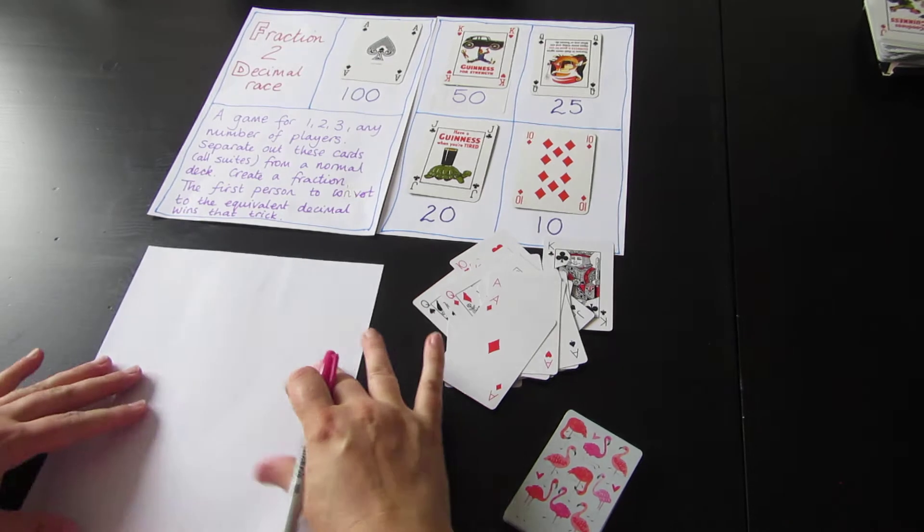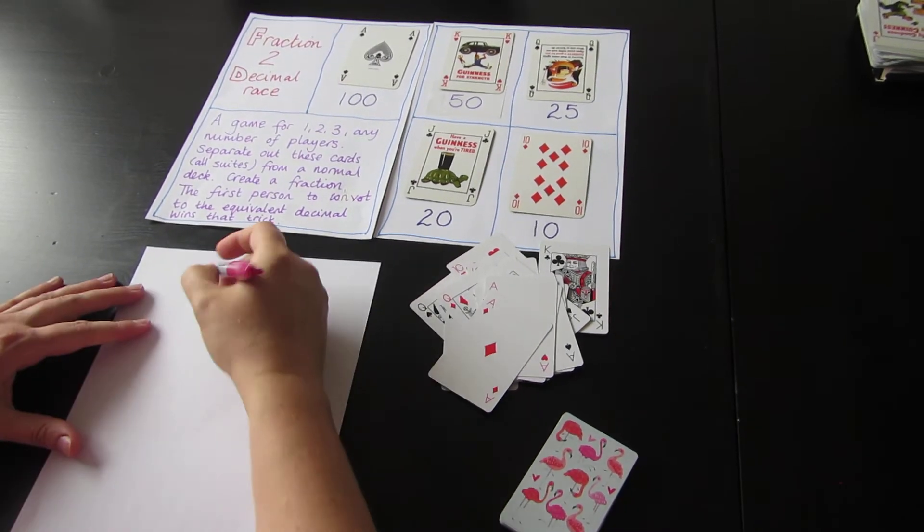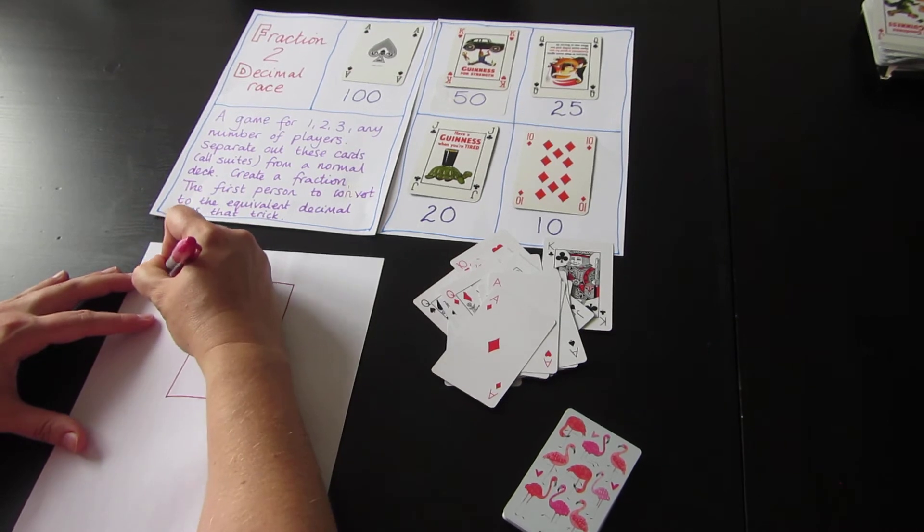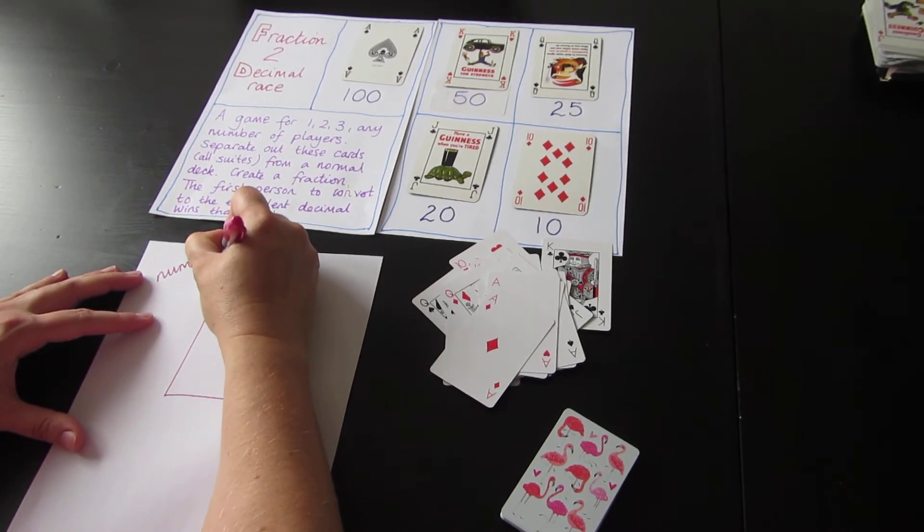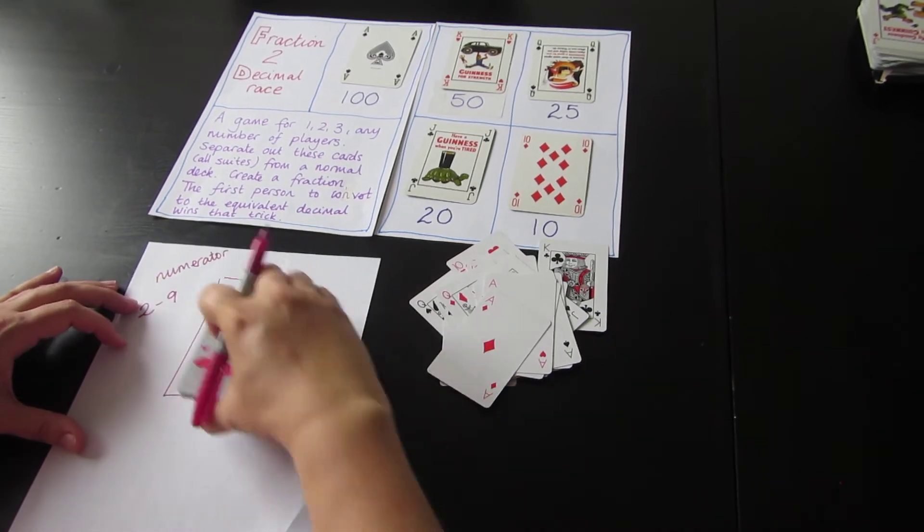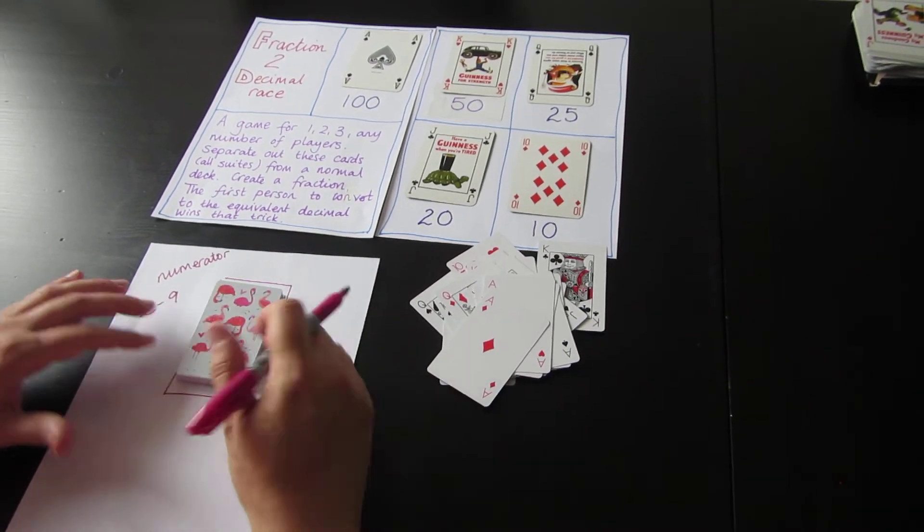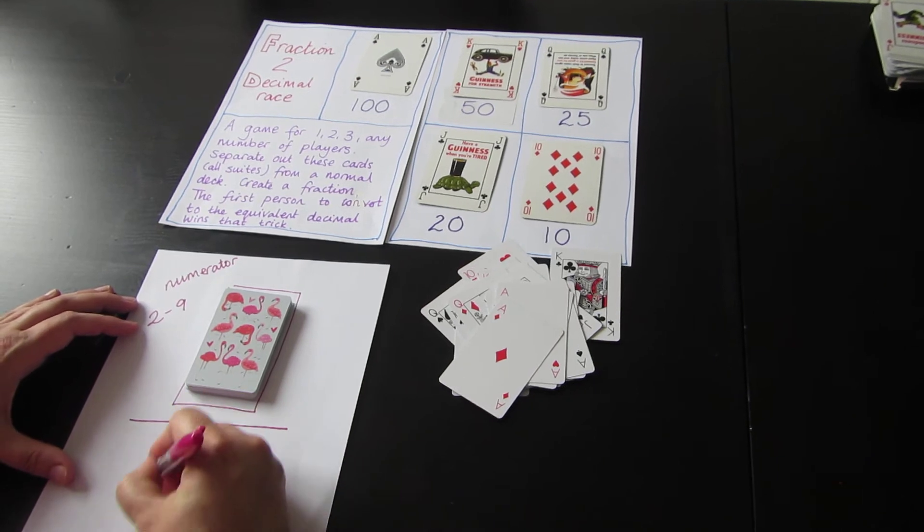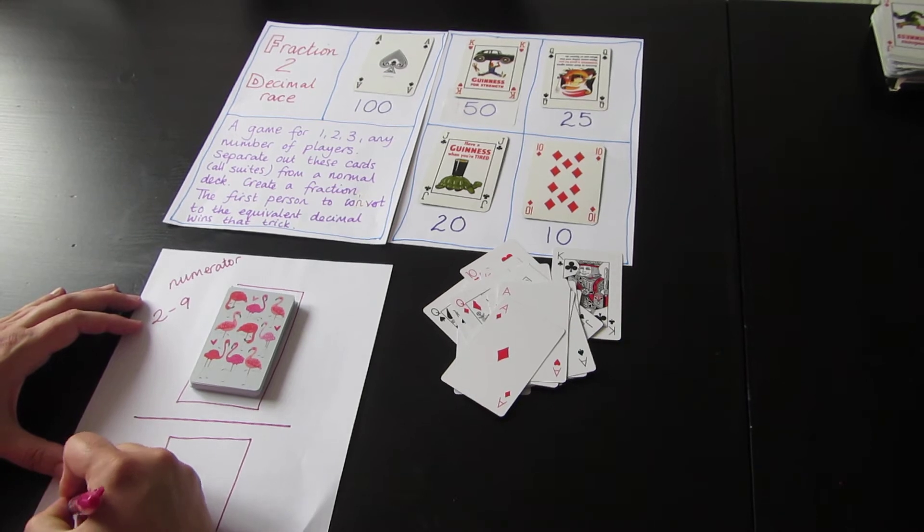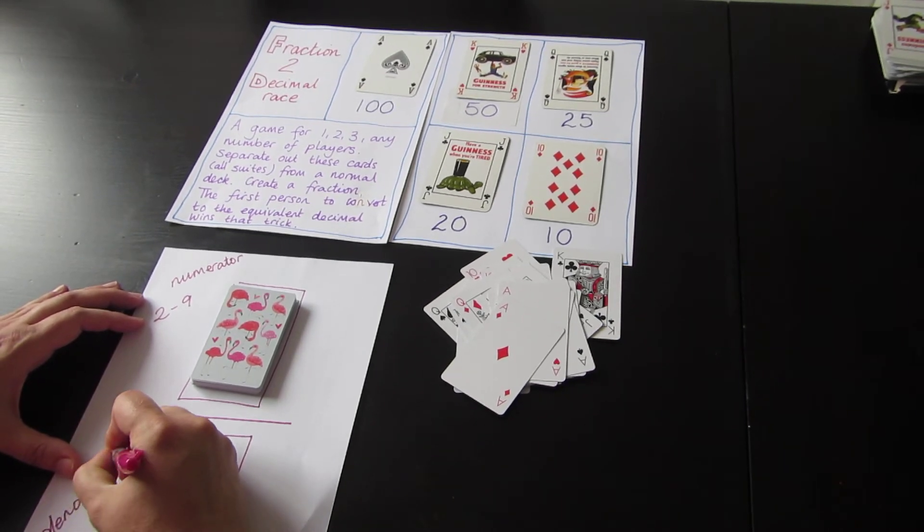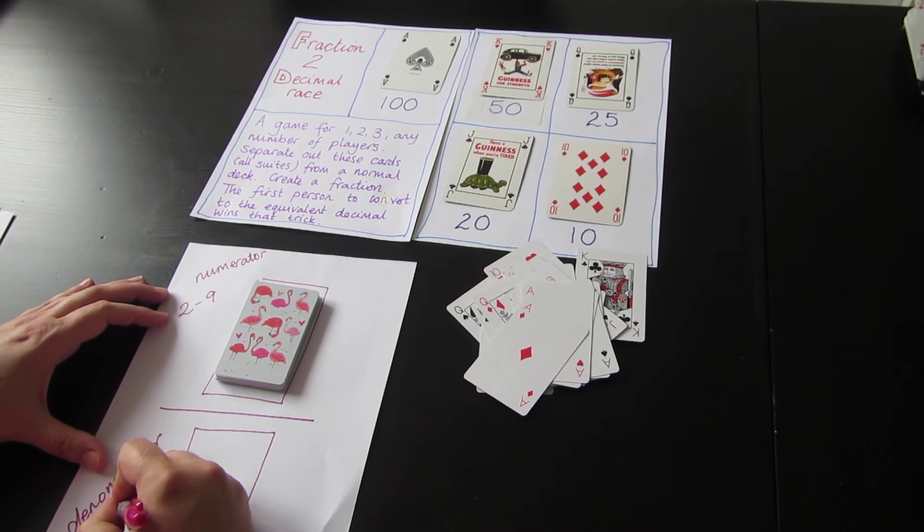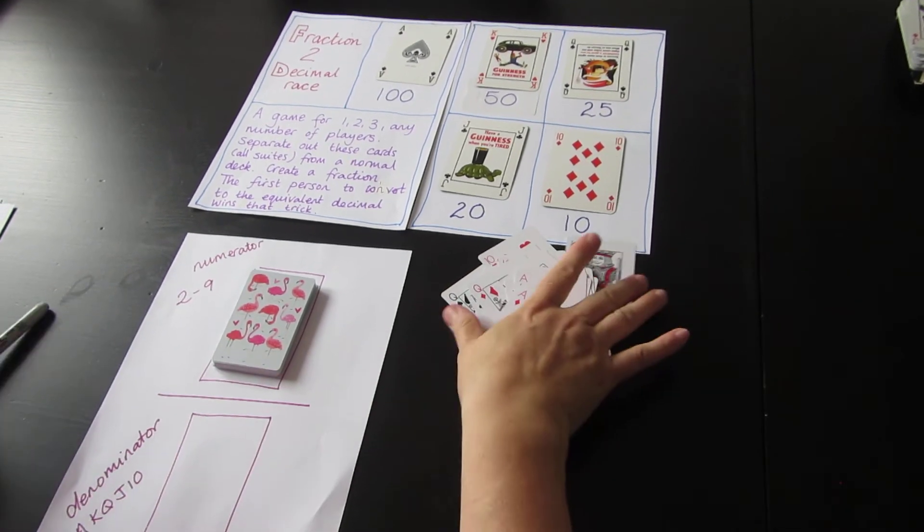Just to help you remember, we're going to make a fraction. The numerator cards are all the cards from 2 to 9. It's a fraction, so I need my fraction line. Here's a space for the denominator - those cards are ace, king, queen, jack, and ten. Give them another little shuffle and put those down as the denominator.